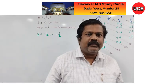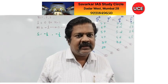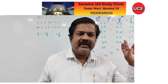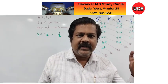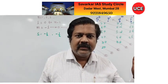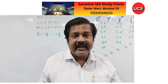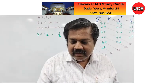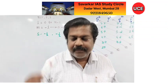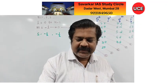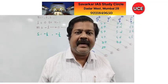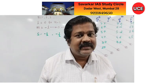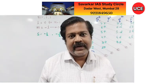So in total, there are 4 quantum numbers: first is principal, second is azimuthal, third is magnetic, and fourth is spin. Now let us work through an exercise.